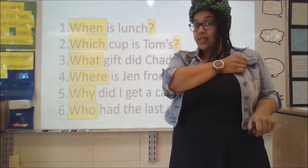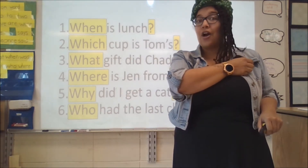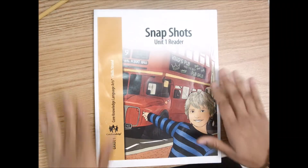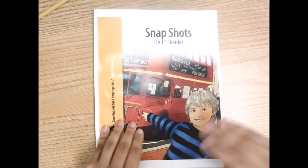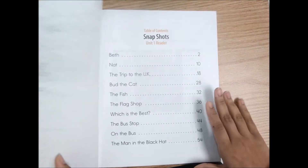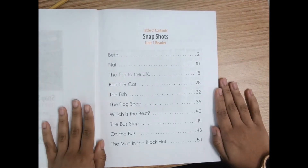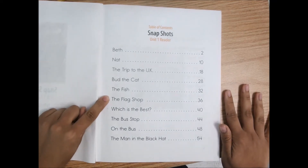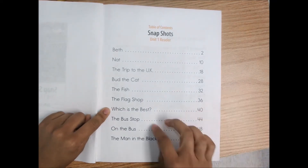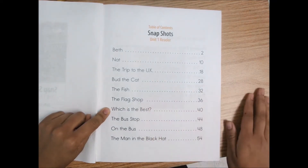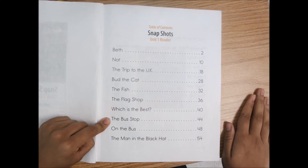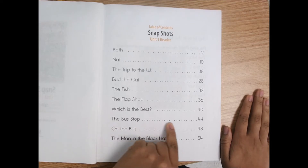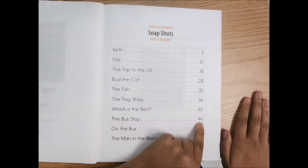So now we're going to read a story together in our Snackshops readers. So I have my reader, I'm ready. We're going to go to the table of contents and we're going to find the next story. Together we read the flag shot, we did 'Which is the Best' — told you it was a question. And so now on to the next one, titled 'The Bus Stop.' It's on page number 44.